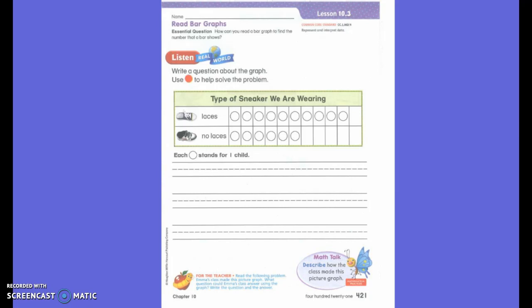So when we look at this graph, what do we see on the graph? We see shoes. What types of shoes are they?